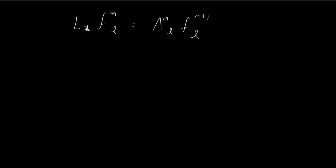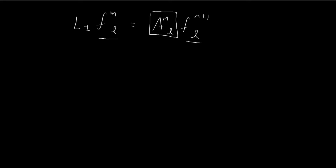We know that if we apply the L+ or L- operator to an eigenfunction, we will get another eigenfunction. But if we start off with a normalized eigenfunction, once we apply this operator, the output will still be an eigenfunction but it will not be normalized. So if we want the output to be normalized, we need to add an adjusting factor. The purpose of this problem is to derive a formula for this factor in terms of M and L.